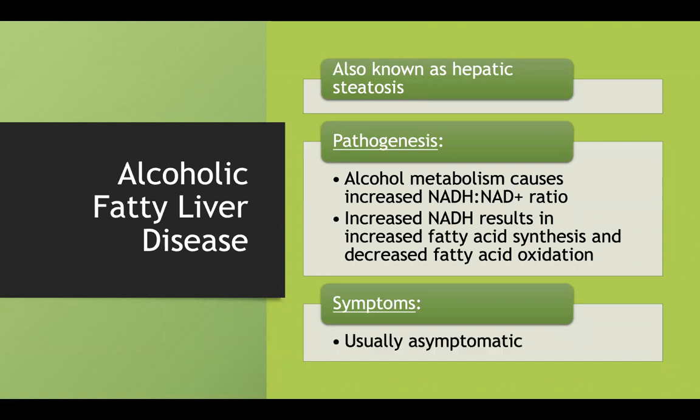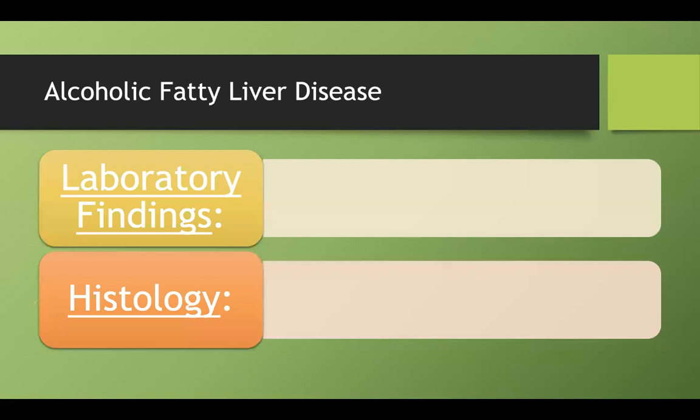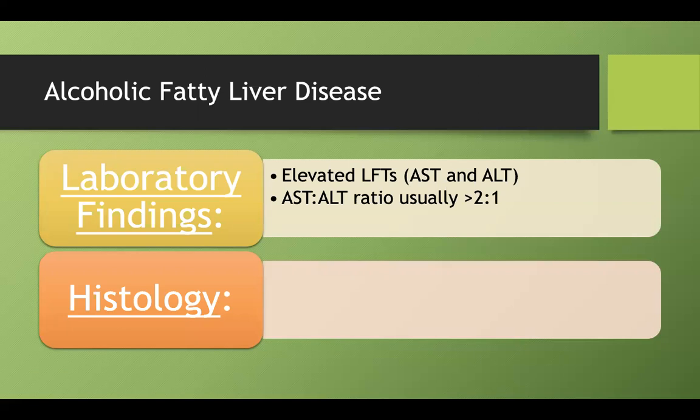People with alcoholic fatty liver disease are typically asymptomatic. On labs, you'll find mildly elevated liver function tests — AST and ALT should both be raised — but the AST to ALT ratio will be unique in that AST will usually be greater than 2:1 compared to ALT.